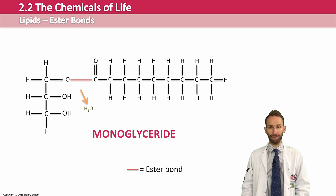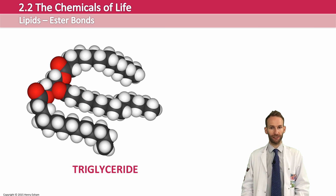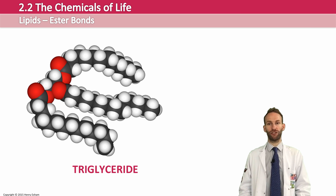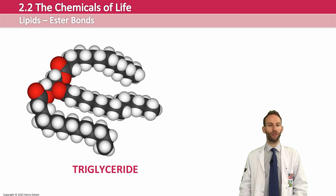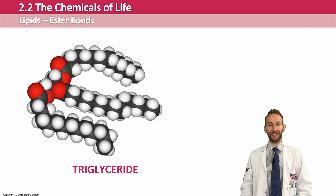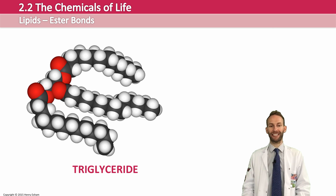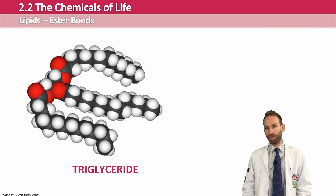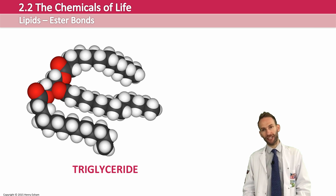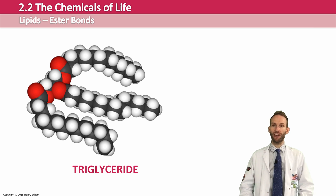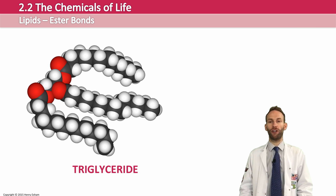If you do this three times, then you're going to end up with a triglyceride. Now, if you wanted to split the same bond again, you can do the opposite reaction to a condensation reaction, which is called a hydrolysis reaction — that is the addition of water, which will break that bond. The function and behaviour of the fat depends on which fatty acids are used to make the triglyceride, because you could use monounsaturated or saturated fatty acids in different combinations, and that will give the fat or oil a different property.